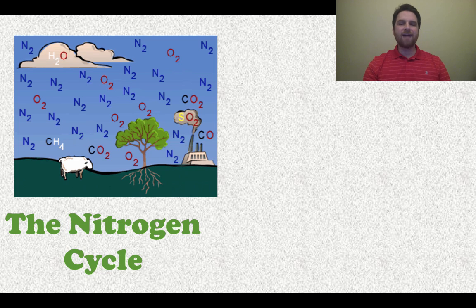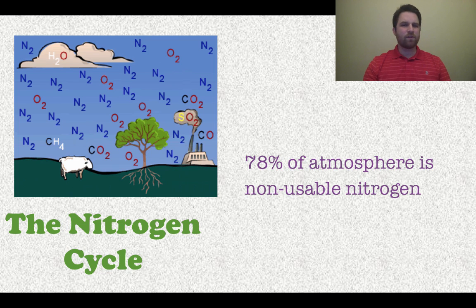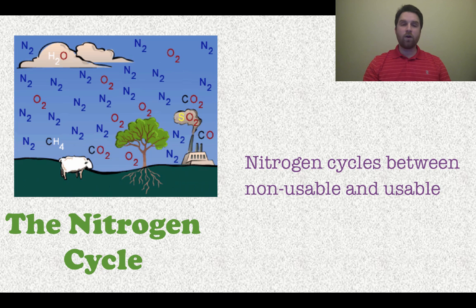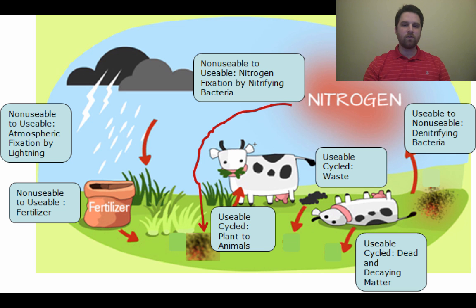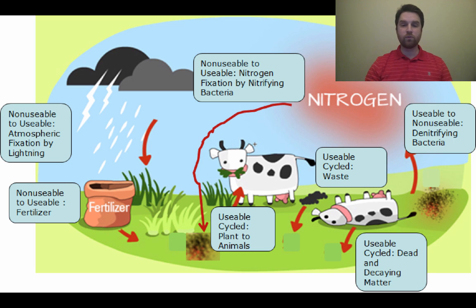On to the nitrogen cycle now. About 78% of our atmosphere is non-usable nitrogen, and this is a problem because we need it to be usable. We don't breathe it, but there are lots of organisms on earth that require nitrogen. So we need nitrogen to cycle between its usable and non-usable forms. I want you to be able to look at this diagram and identify where nitrogen goes from non-usable to usable forms and back.